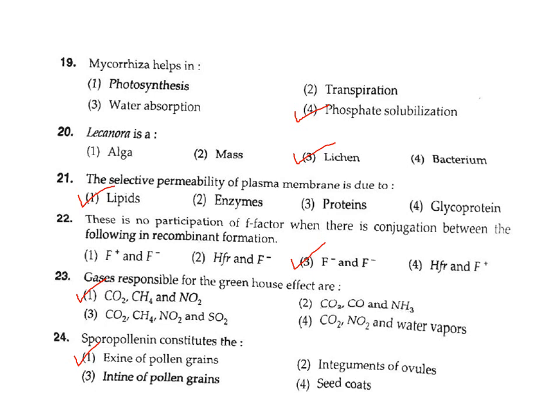Question 20: What is Lecanora? Lecanora is a lichen, Option 3. Question 21: The selective permeability of the plasma membrane is due to what? Selective permeability is due to lipids, because lipids do not allow all molecules to pass through. After that, permeability increases due to proteins, which act as channel formers and facilitate transport of molecules through those channels.